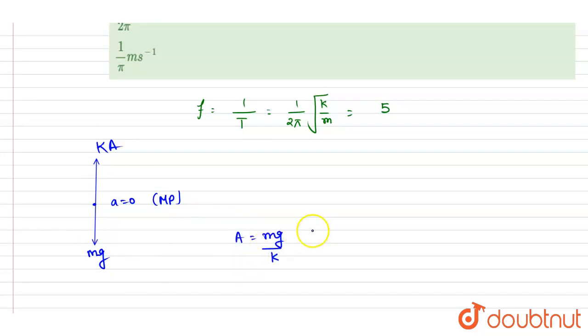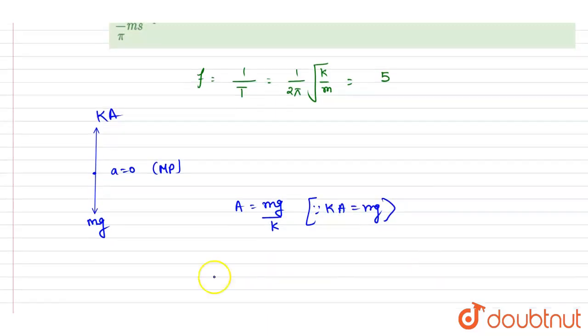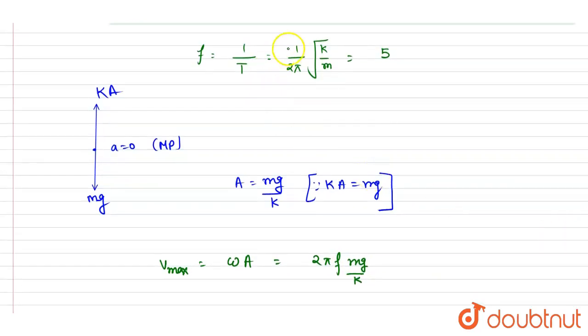Since the net force is zero, so we know that if I talk about the maximum velocity, maximum velocity will be equals to omega A, so omega here is 2πf, A is mg by k.